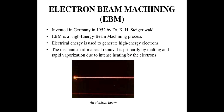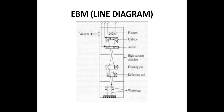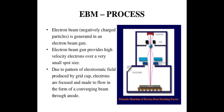Here I have shown the electron beams in the figure. Now here I have shown the line diagram of electron beam machining — you can see the different parts. I have shown the vacuum, the filament, cathode, anode, high vacuum chamber, then the focusing coil, and after the focusing coil we have the deflecting coil, which impinges on the workpiece. Now I will discuss about this process.